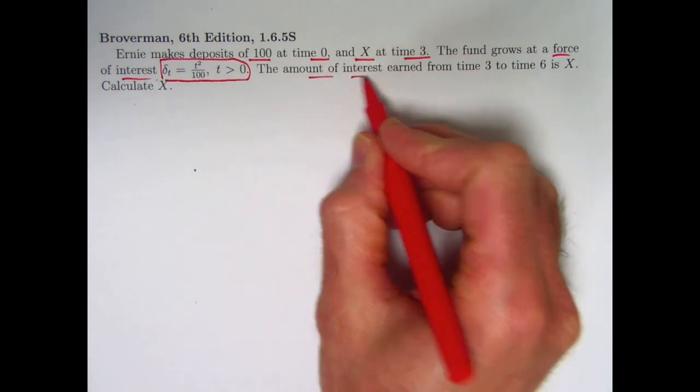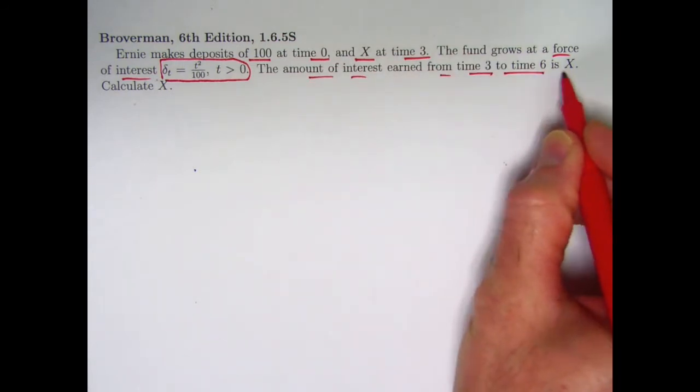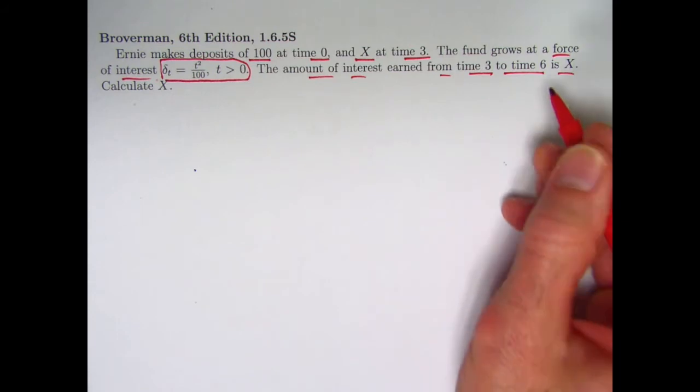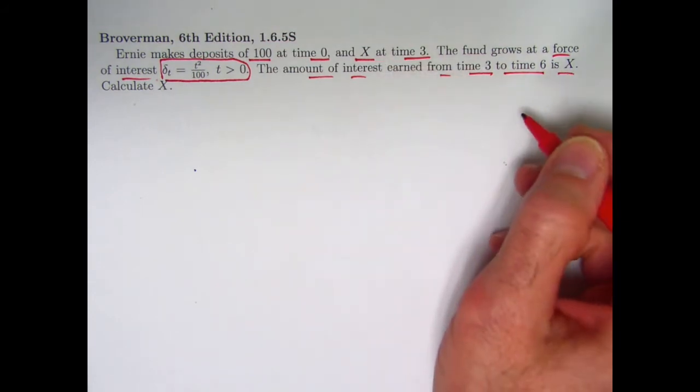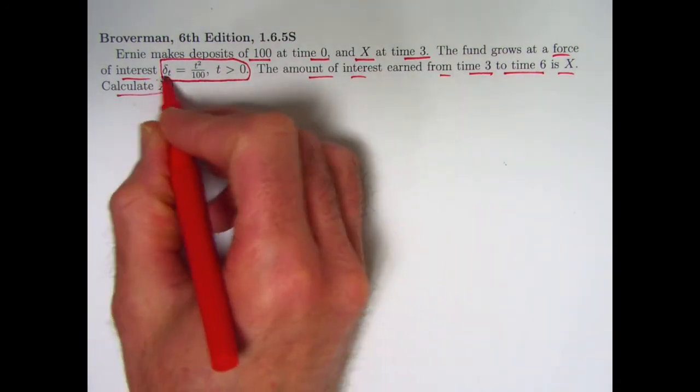The amount of interest earned from time 3 to time 6 is x. So x is showing up in two ways in this problem, both as a deposit at time 3 and the amount of interest earned overall from time 3 to time 6. The goal is to calculate x.